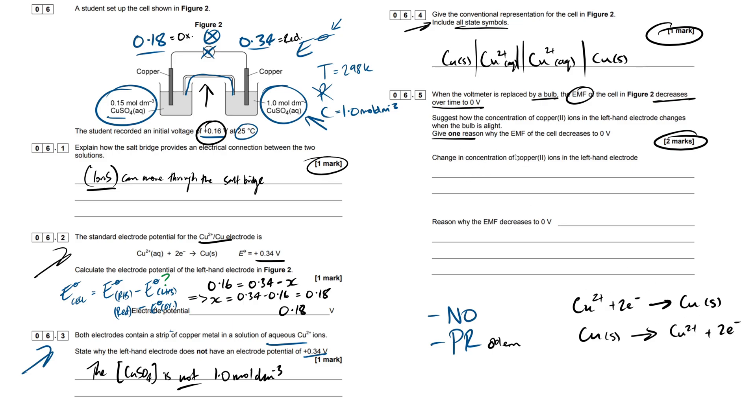Hopefully that makes sense. The concentration will increase, because we've got oxidation occurring, therefore we're going to have that ionic solution increasing in concentration. Next we have to say, what is the reason why that EMF decreases to 0 volts?